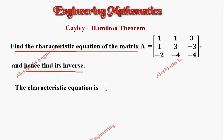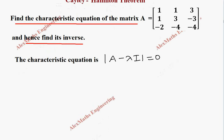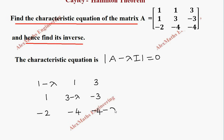The characteristic equation is determinant of A minus lambda I equal to 0. So the first element will be 1 minus lambda, other two elements as they are. Then second row: 1, then 3 minus lambda and minus 3. Then third row: minus 2, minus 4, minus 4 minus lambda, and this determinant value equals 0.